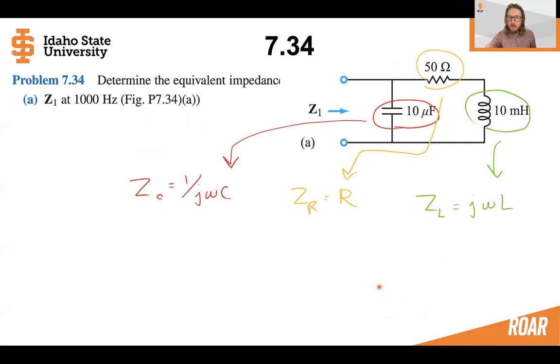We know that from the table in the textbook, we can look up what the phasor domain representation of all of these circuit elements are. Based on that, we know that the capacitor is 1 over j omega c, the inductor is j omega l, and the resistor has the same impedance in the phasor domain.